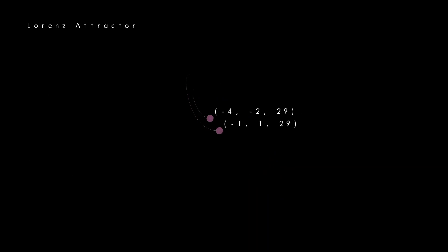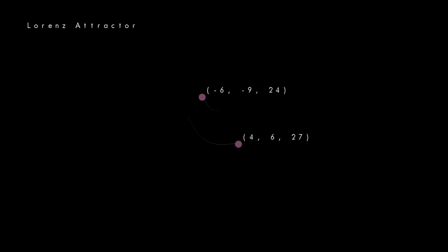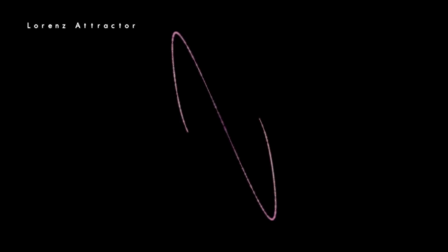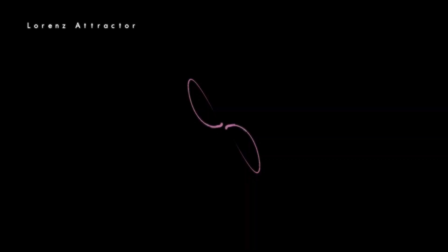It turns out that if you put two points really close to each other and run the program, they stay together in the beginning, but they eventually take completely different paths. Here I set 500 closely packed points and programmed in some pretty tails. As you can see, they seem to be revolving around two regions in space. These regions are called attractors. You can never really predict when a point will move from one attractor to another, and that's what makes it chaotic.